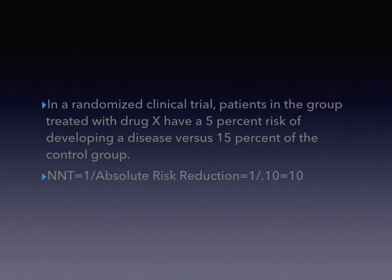An example — taken from the previous lecture: in a randomized clinical trial, patients in the group treated with drug X have a 5% risk of developing a disease versus 15% of the control group. We calculated the absolute risk reduction as 0.10, so dividing 1 by 0.10 gives us 10. So 10 people would need to be treated to save an average of one person who would otherwise be harmed by not being treated.